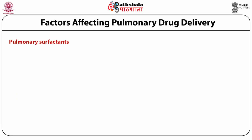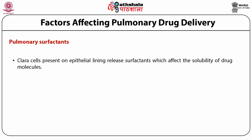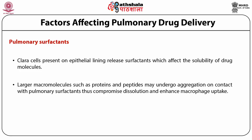Regarding pulmonary surfactants: Clara cells present on the epithelial lining release surfactants which affect the solubility of drug molecules. Larger macromolecules such as proteins and peptides may undergo aggregation when in contact with pulmonary surfactants, compromising dissolution and enhancing macrophage uptake, thus affecting their bioavailability. On the other hand, surfactants promote the dissolution of smaller lipophilic molecules — so for those molecules, surfactants help absorption, while for larger molecules, they diminish absorption.